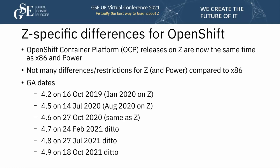This is how the original presentation started, with Z-specific differences. Last year we were halfway down those dates, and I pointed out that we had just become timely in releases rather than playing catch-up as we were with 4.2, 4.3, and so on. The nice point now is there's no story — we're caught up; releases on Z are at the same time. That's one less thing to worry about.